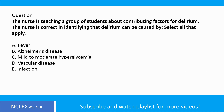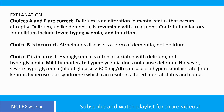The nurse is teaching a group of students about contributing factors for delirium. The nurse is correct in identifying that delirium can be caused by — select all that apply: A. Fever. B. Alzheimer's disease. C. Mild to moderate hyperglycemia. D. Vascular disease. E. Infection. Answer: Choices A and E are correct.